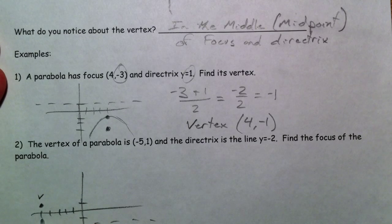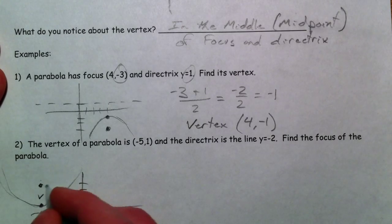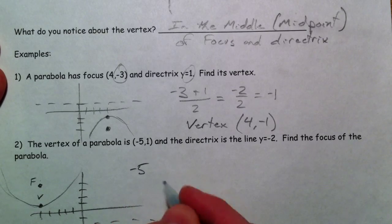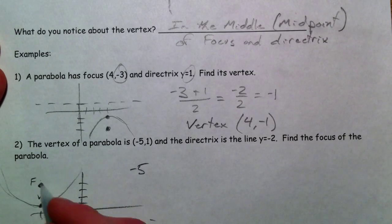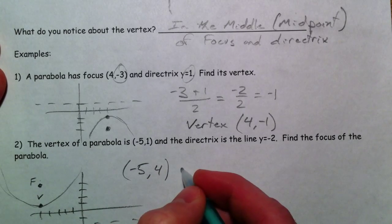Well, so then we're 3 away from the vertex. The focus has to be on the opposite side, 1, 2, 3. And so your parabola is going to open up until your focus has to be negative 5. We went up 3, and so let's go up another 3, 4 for the focus.